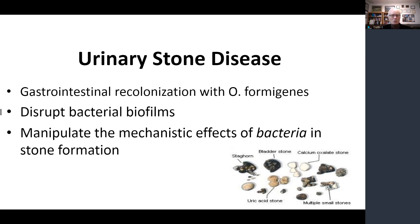As far as urinary stone disease is concerned, we could consider gastrointestinal recolonization with Oxalobacter formigenes and other bacteria that are involved in the oxalate mechanism. We're just learning how to disrupt bacterial biofilms in various disease states, and that will certainly help for bacteria associated with stones, such as struvite stones. And if we can manipulate the mechanistic effect of bacteria within the urinary tract in stone formation — but this will only come with more knowledge on how that actually works.